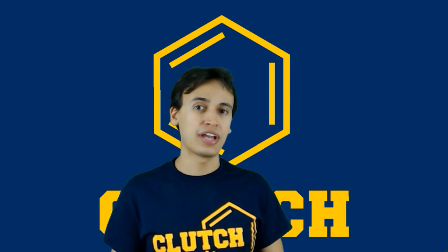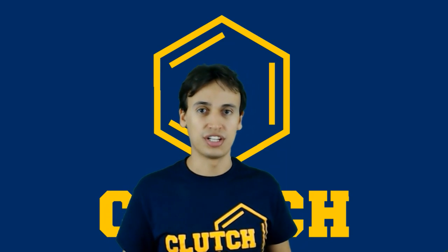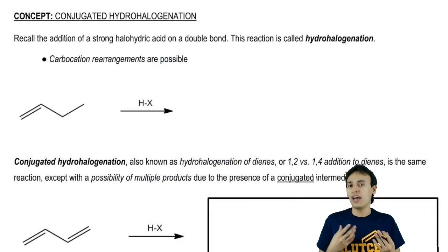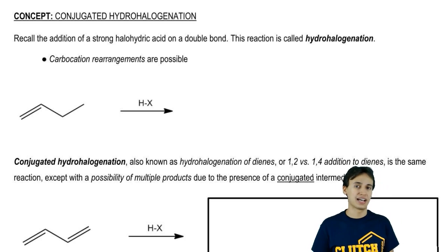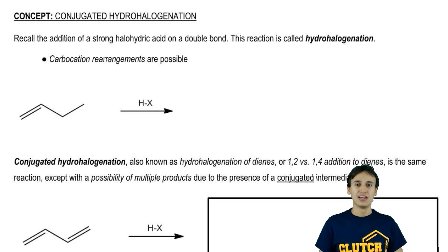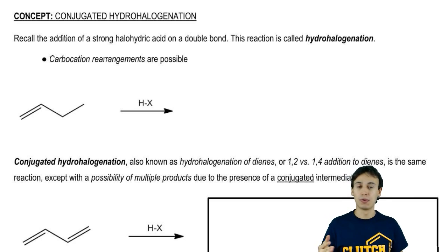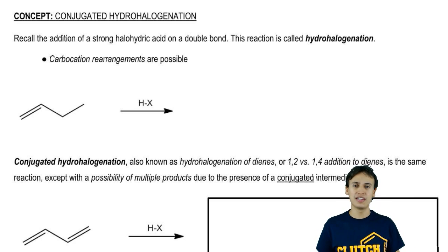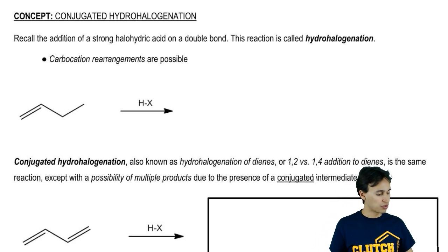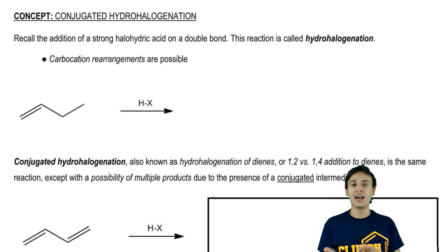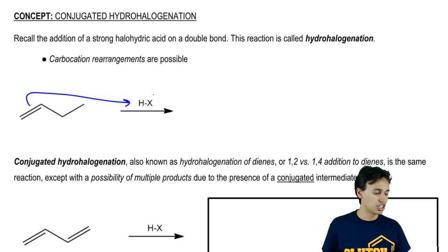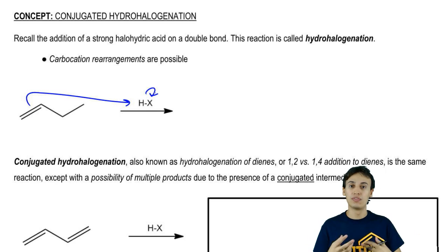We're going to discuss an allylic site reaction called conjugated hydrohalogenation. For conjugated hydrohalogenation to take place, we need a double bond and a strong halo-hydric acid like HCl or HBr. We're going to run into a problem because there's already a reaction that happens between a double bond and HX — an addition type reaction where the double bond is nucleophilic and HX is highly electron deprived, giving a carbocation and Markovnikov addition.